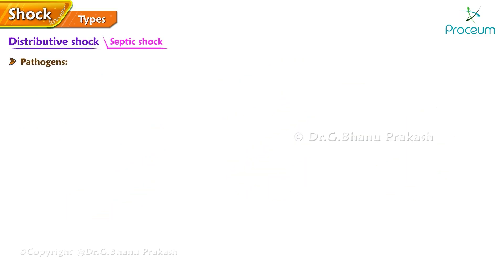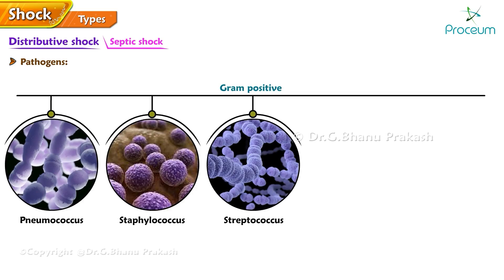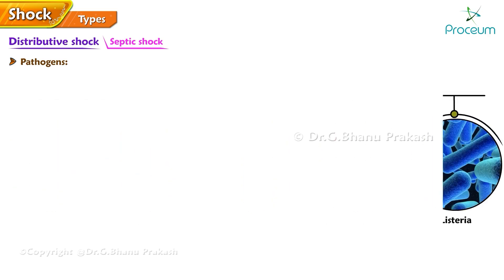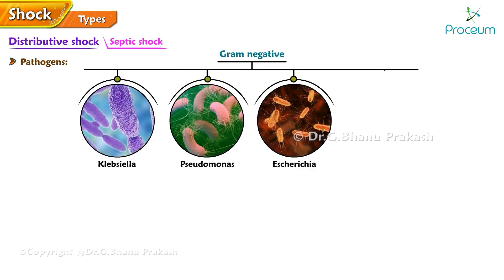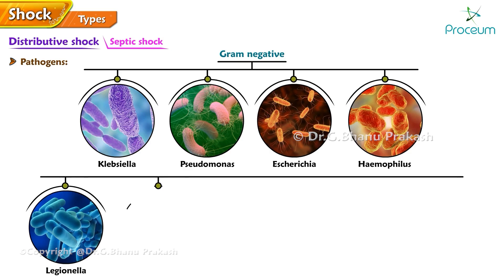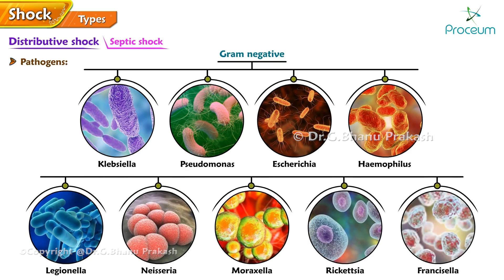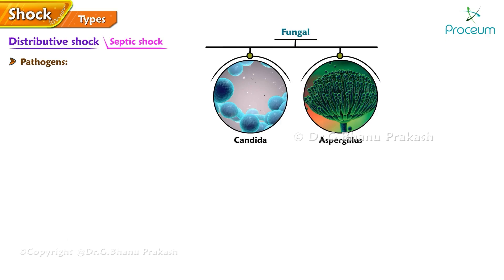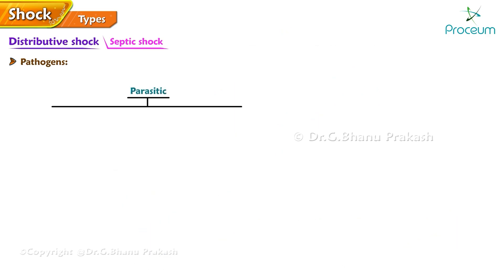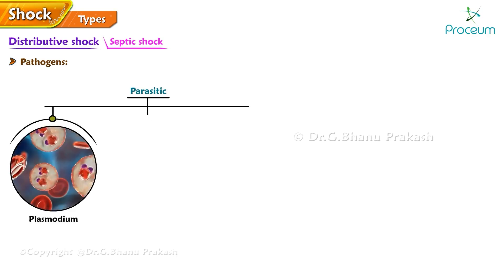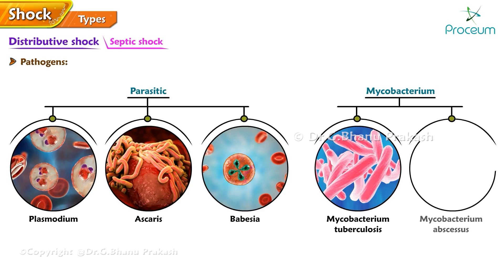Pathogens responsible for septic shock include: gram-positive organisms such as pneumococcus, staphylococcus, streptococcus, enterococcus, and listeria; gram-negative organisms like Klebsiella, Pseudomonas, Escherichia, Haemophilus, Legionella, Neisseria, Moraxella, Rickettsia, and Francisella; fungal pathogens including Candida and Aspergillus; viral infections such as influenza, cytomegalovirus, Ebola, and varicella; parasitic infections such as Plasmodium, Ascaris, and Babesia; and mycobacterium species like Mycobacterium tuberculosis and Mycobacterium abscessus.